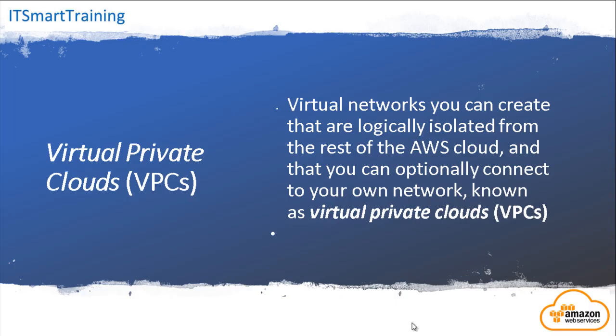Next is Virtual Private Cloud. Virtual networks that are logically isolated from the rest of the AWS Cloud are called VPCs. Suppose you have four virtual machines — you want two of them to communicate with the public network, and two virtual machines should not communicate with the public network.